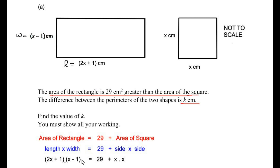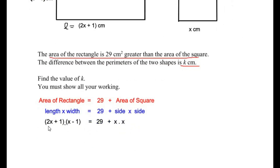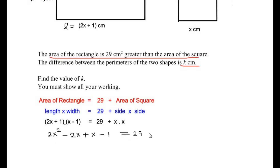Now let us expand the brackets and distribute the terms. So we have 2x times x gives us 2x², and 2x times negative 1 gives us negative 2x, plus 1 times x gives us x, and 1 times negative 1 gives us negative 1, equals 29 plus x times x which gives us x².